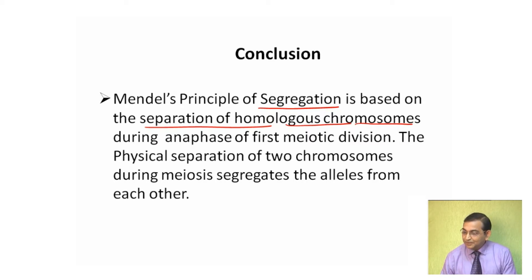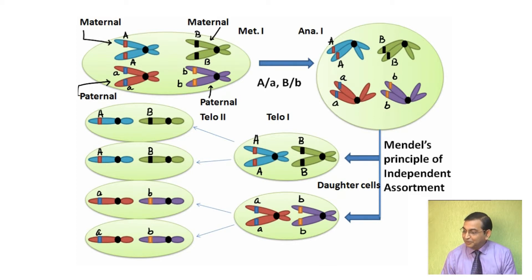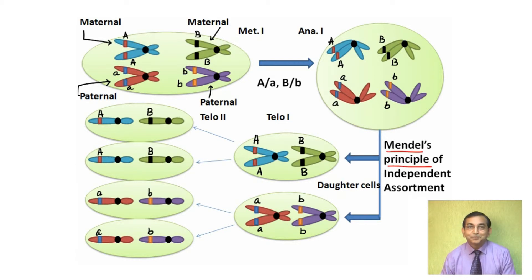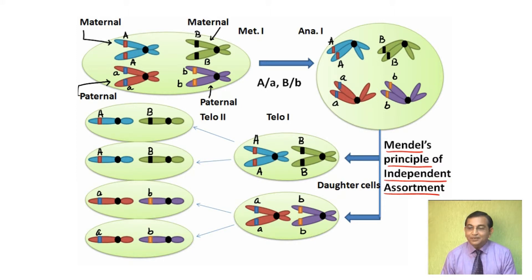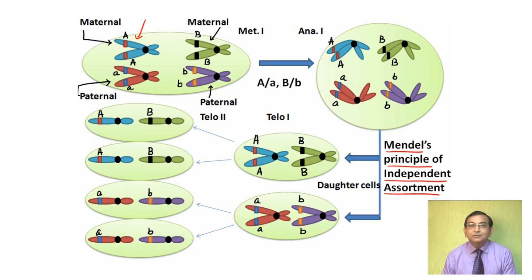In this diagram, we are showing Mendel's principle of independent assortment. In this principle, the genes or alleles segregate independently. The maternal chromosomes are arranged in the equatorial plane along with the paternal chromosomes. The maternal chromosomes carry two alleles, capital A and capital B, while the paternal chromosomes carry small a and small b alleles.